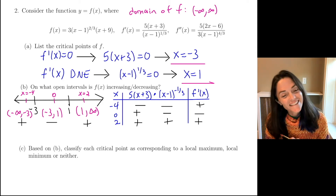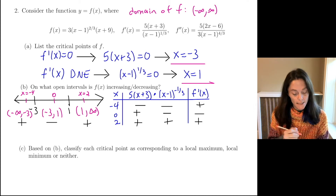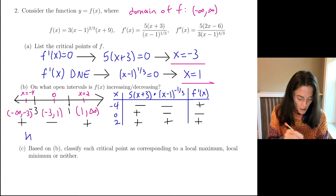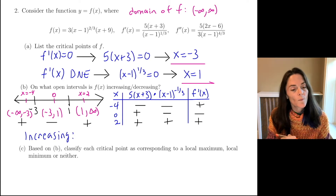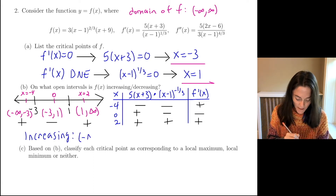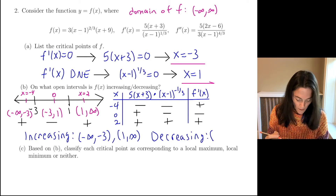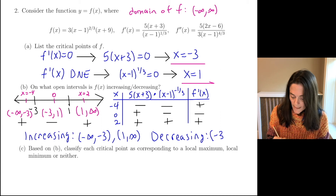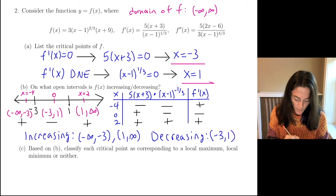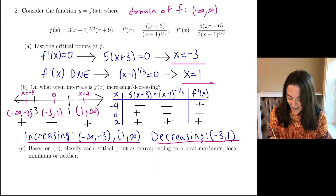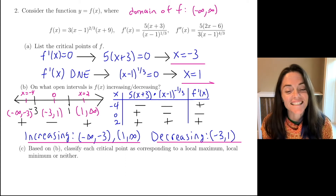Now I can write my conclusion about increasing and decreasing. My original function is increasing everywhere I see a plus — that's two open intervals: minus infinity to minus 3 and 1 to infinity. And it's decreasing everywhere I see a minus, which is one open interval: minus 3 to 1. So this is the answer to letter B — open intervals of increasing and an open interval of decreasing.